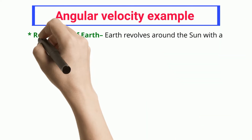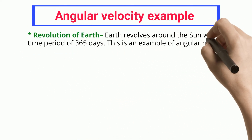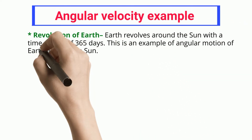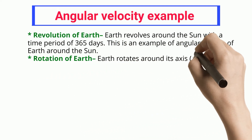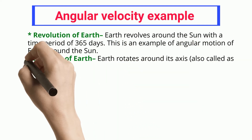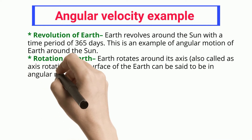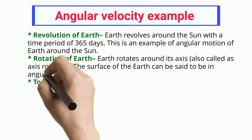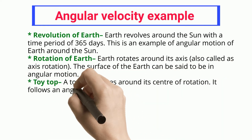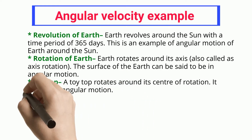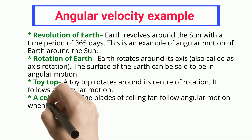Revolution of Earth: Earth revolves around the Sun with a time period of 365 days — this is an example of angular motion of Earth around the Sun. Rotation of Earth: Earth also rotates around its own axis, and the surface of the Earth can be said to be in angular motion.